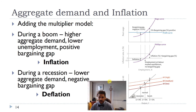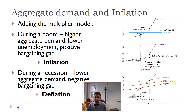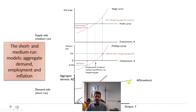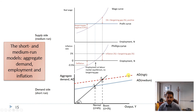How does this relate to our model of aggregate demand and the multiplier? When there's a boom and aggregate demand is high, that's when we get inflation. When aggregate demand is low and there's a recession, that's when we get deflation. These are really two sides of the same coin — two different ways of looking at it. When aggregate demand is high, we move up the wage curve, we move up the Phillips Curve, and we get higher inflation and lower unemployment. When aggregate demand is low, we move down the wage curve, we move down the Phillips Curve, and the unemployment rate is higher and inflation is lower.